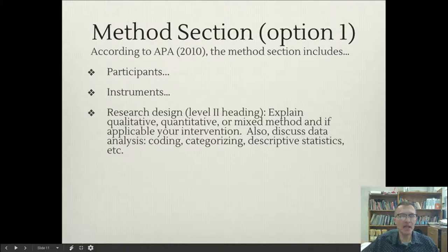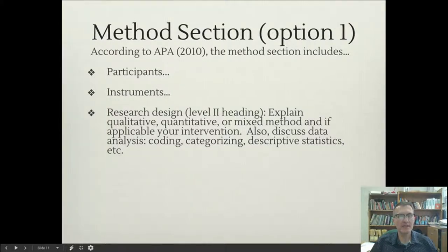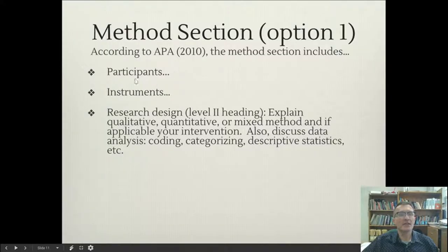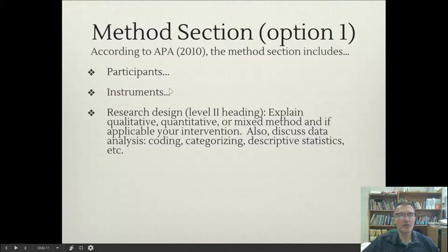You don't have to include the signed copies, but do include the format. In this one paragraph under Participants, you'll want to include a citation in parentheses referencing See Appendix A, See Appendix B, and so on. You're going to list these alphabetically in the order that you present your documents in your thesis paper. In your Participants section, include the informed consent form and any permission letters that you obtained to get permission to do your study.